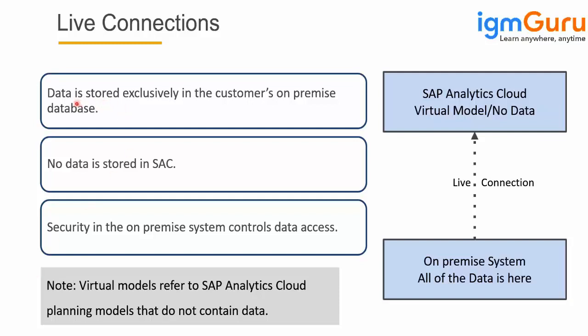Data is stored exclusively in the customer's landscape, so it is not copied anywhere to the SAC server. It stays at your on-premise or physical location where the database is present, and no data is stored in SAC. Since it is not copied, nothing is transferred to SAC, and security-wise it is controlled by the on-premise system.